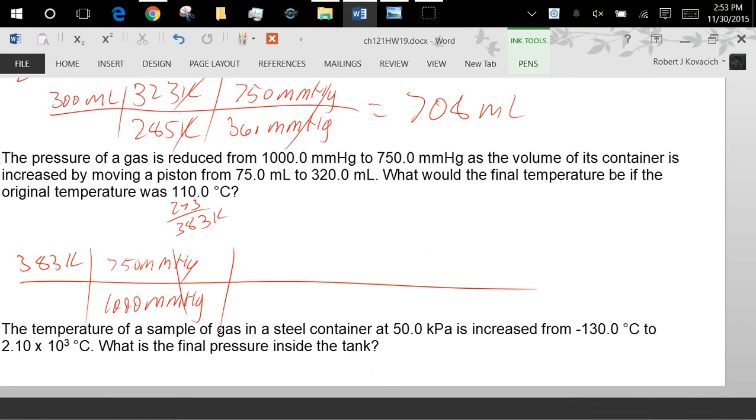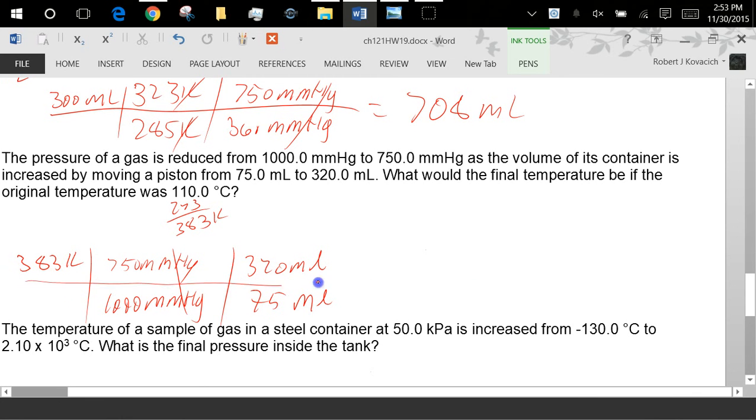The volume of the container is increased by moving a piston from 75 to 320 milliliters. So how are temperature and volume related to each other? If the volume got bigger, what must have happened with the temperature? It must have gone up. The volume got bigger. If I've got an object of gas and it's this big and the volume of the gas got bigger and it was related to temperature, how did that happen? What would the temperature need to have done to make the thing get bigger? So 320 milliliters and 75 milliliters. So 383 times 750 divided by 1,000 times 320 divided by 75. So it looks like 1,250 K, 953 degrees Celsius.